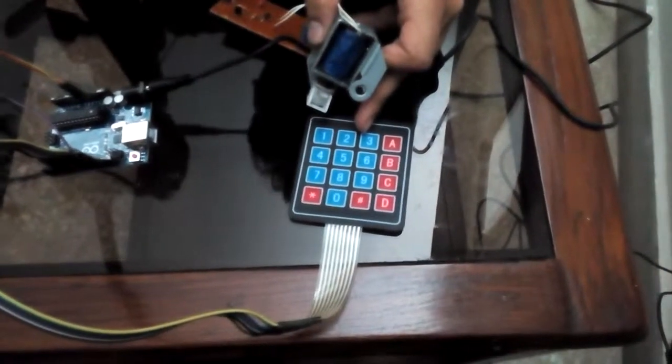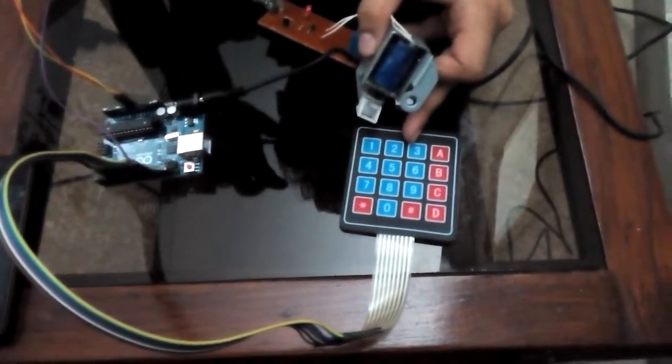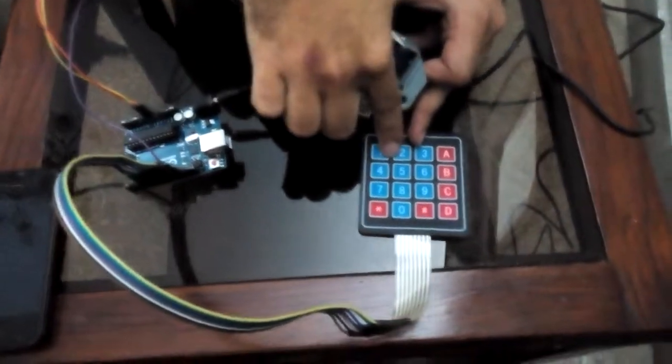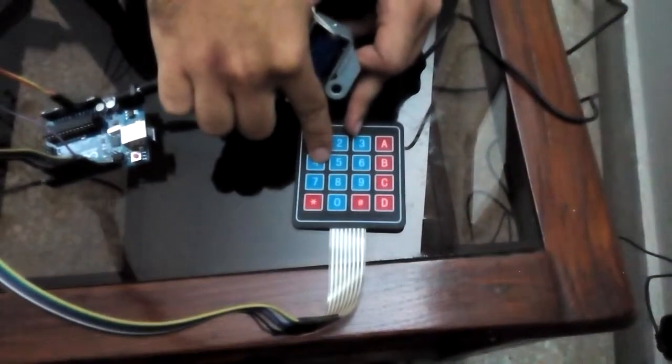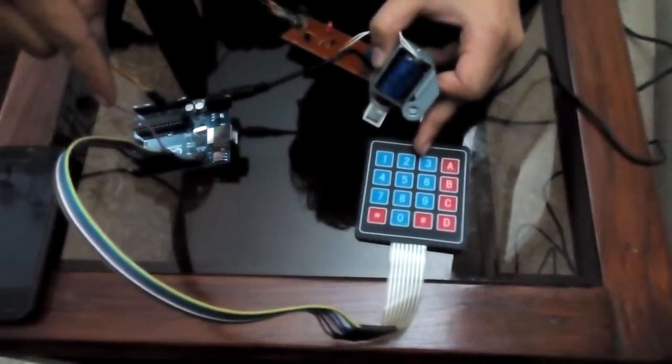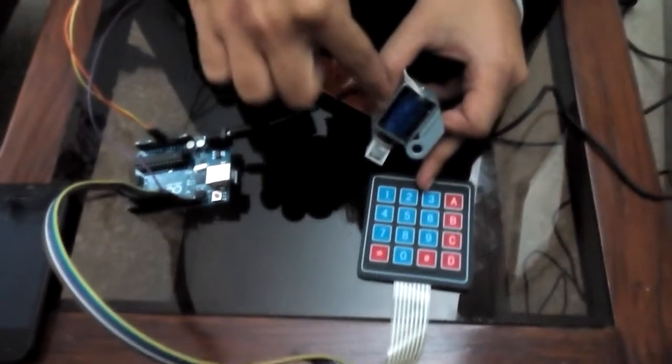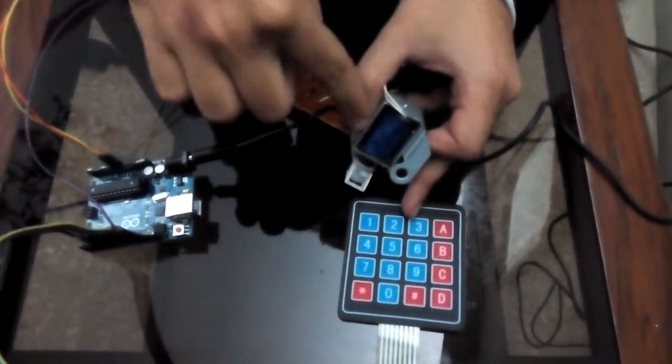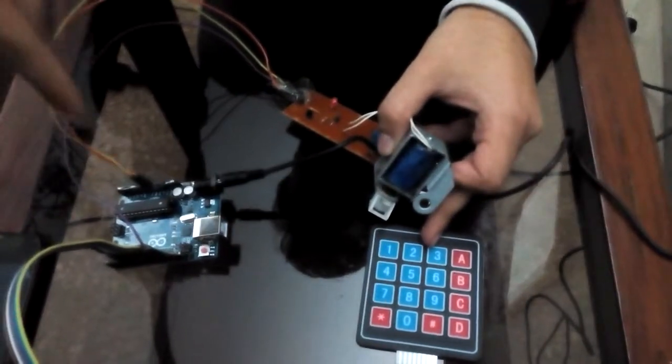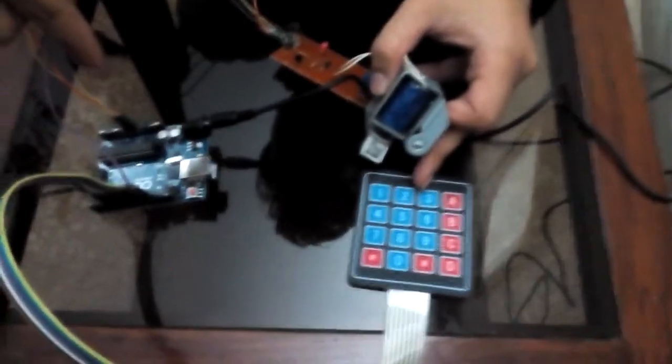This project is in assembled form. We have connected this 4x4 matrix with the UNO, and obviously the door lock system with the relay to the Arduino.